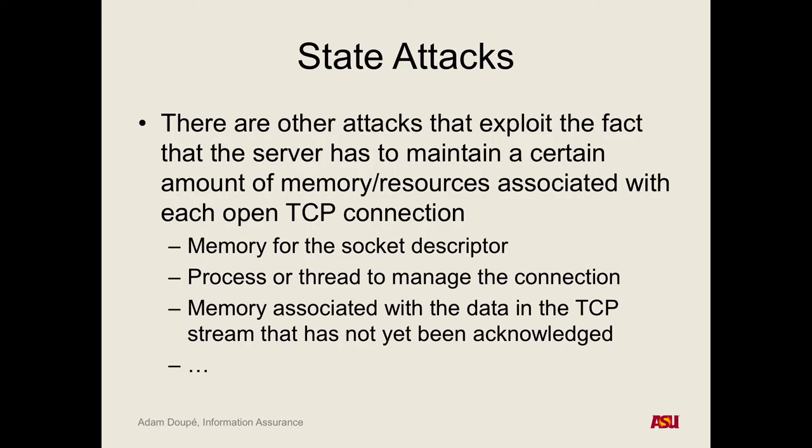It used to be said that if you took an unpatched Windows XP machine and plugged it directly into the internet with a publicly routable IP address, within 10 minutes that machine would be infected with malware. There are worms constantly scanning the IP address space, looking for vulnerable instances and automatically taking them over. Why doesn't that happen as much anymore? Let's check — what's your IP address on the network here? It's a 10.x.x.x address. The 10 network space is a private network space — so how can you still access the internet? How can Google talk to you?